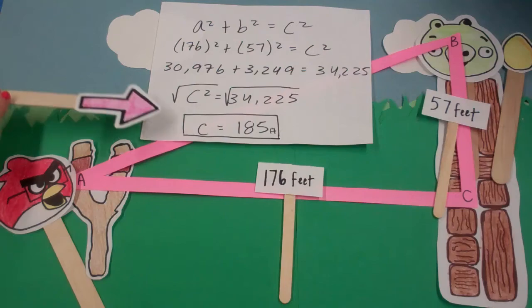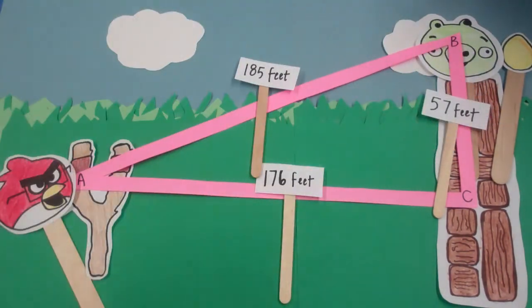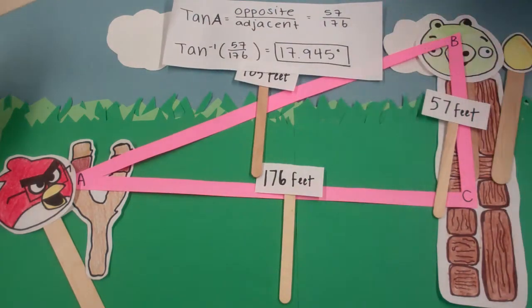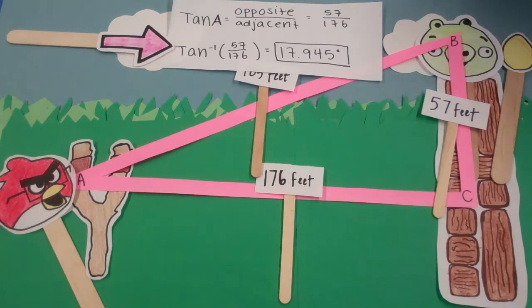Now that he knows the distance he has to travel to hit the pig, he must find the trajectory at which to travel. Using the properties of tangent, the Angry Nerd knows that if he takes the inverse tangent of the opposite side over the adjacent side, he will get theta, in this case, angle a. So he takes inverse tangent of 57 over 176 and gets 17.945 degrees, the measure of angle a.